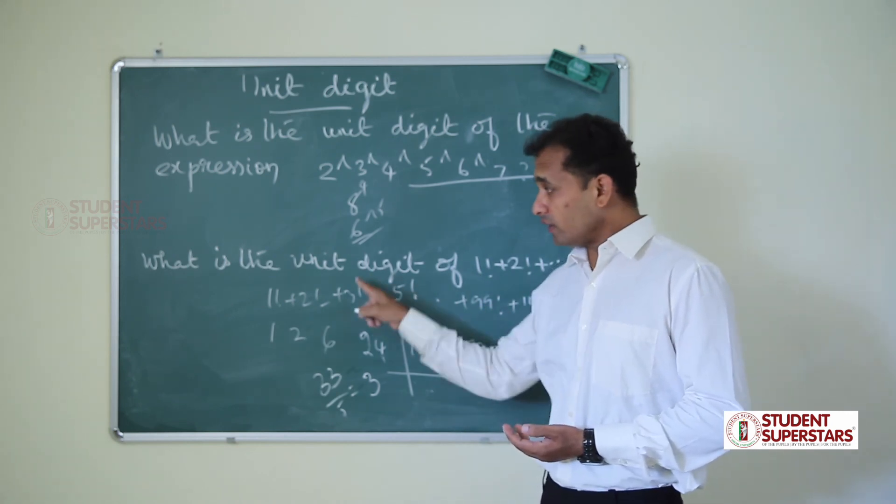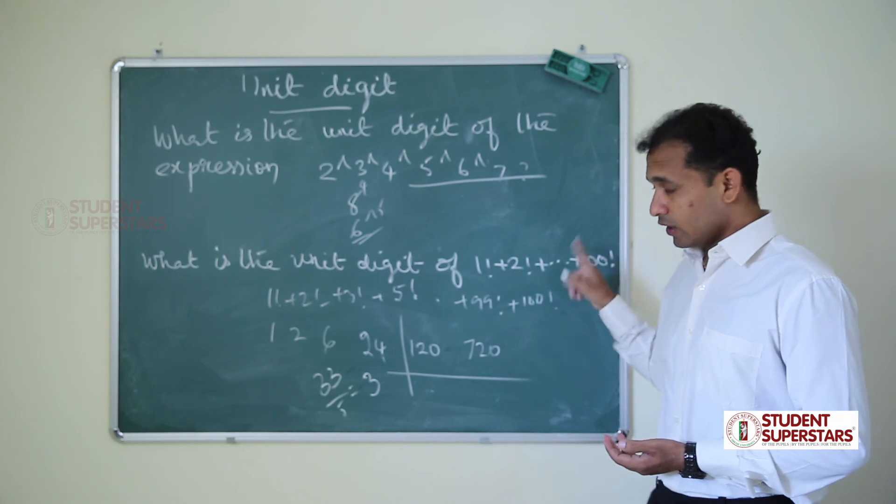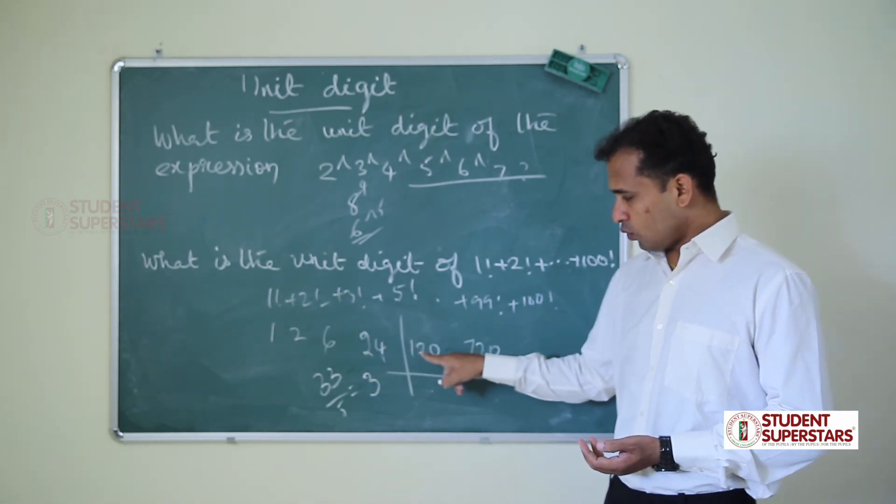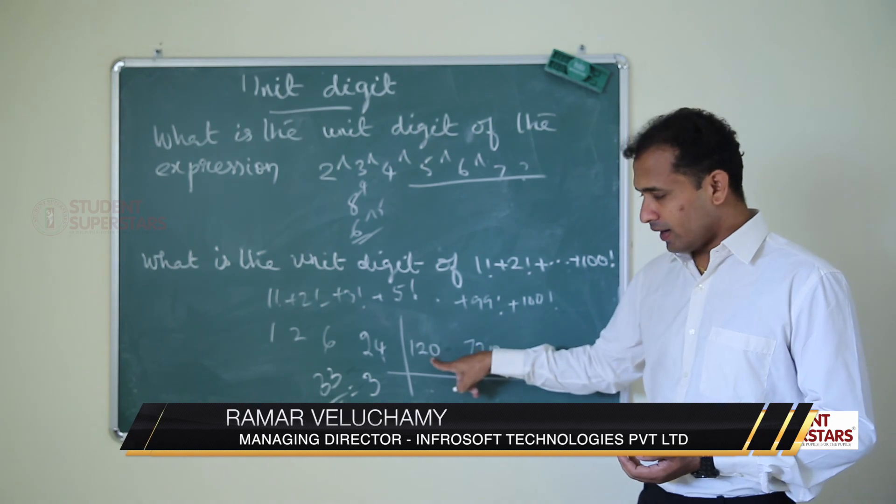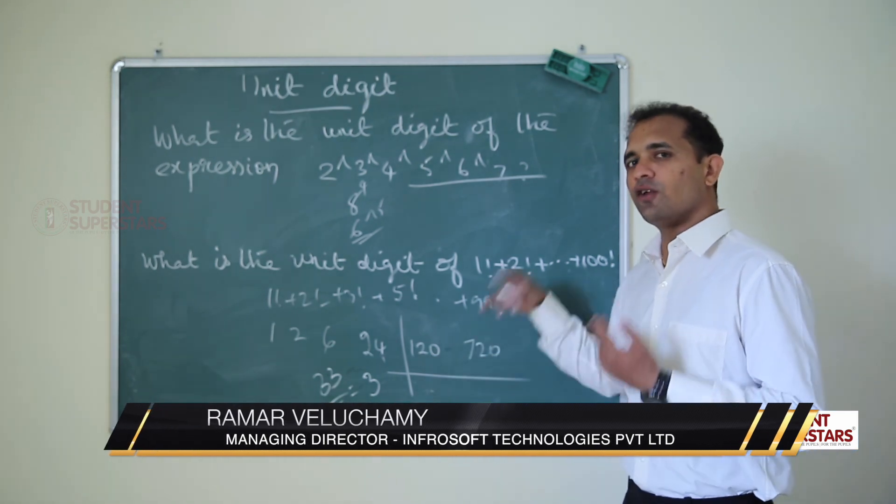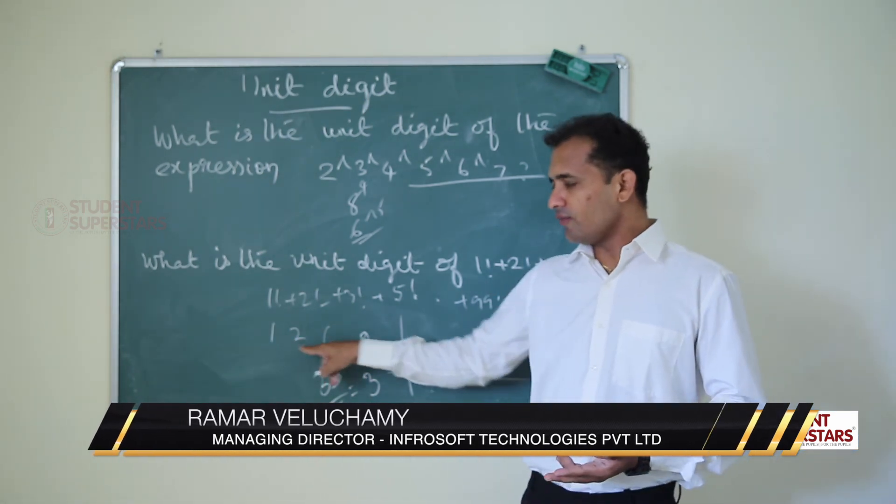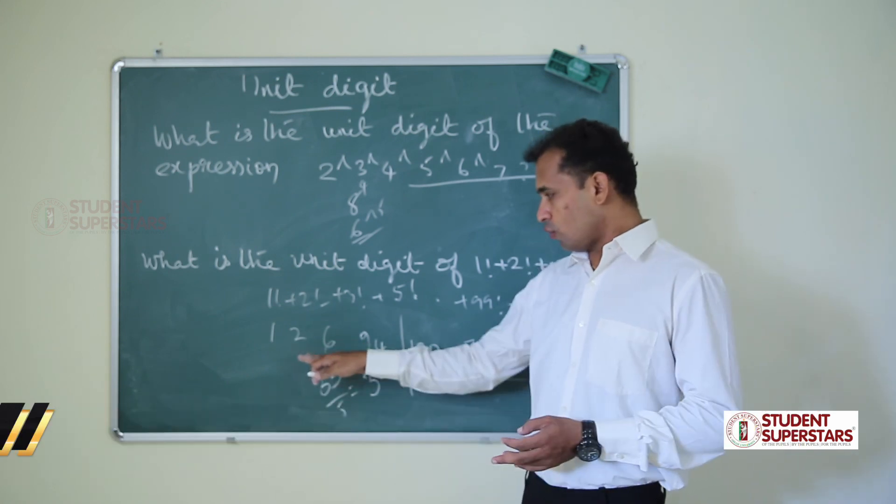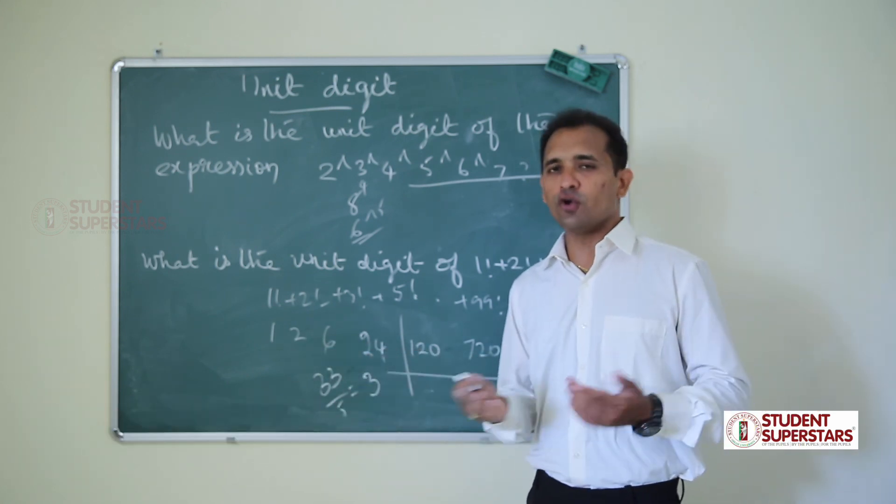Clear? First question, what is the unit digit of this series? Unit digit: 1, 2, 6, 24, 120. So after 120, if you multiply with any number, the unit digit will be 0. So we are calculating first 4 factorial values, which is 33. So unit digit is 3.